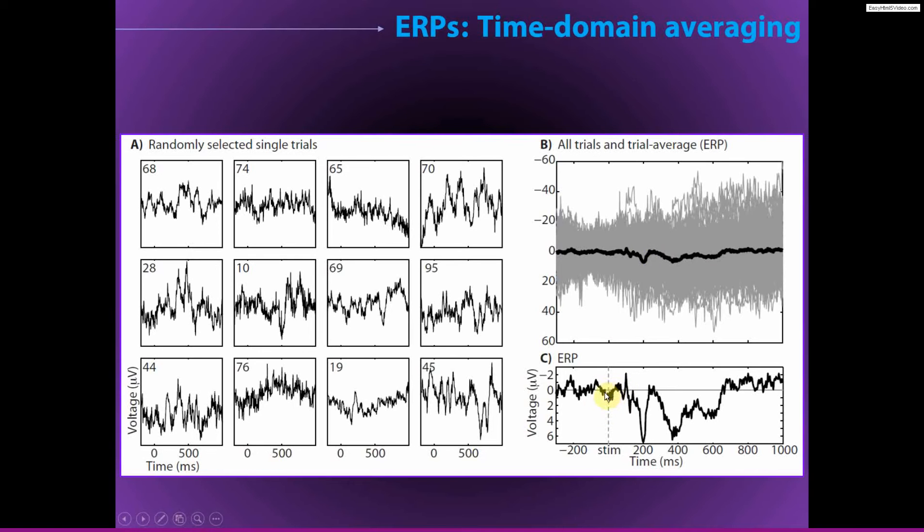Here you can see the same exact ERP, but just on a more focused y-axis scaling. One of the first things that you will notice about the difference between the ERP and the single trial data is that they differ in amplitude by approximately one order of magnitude.